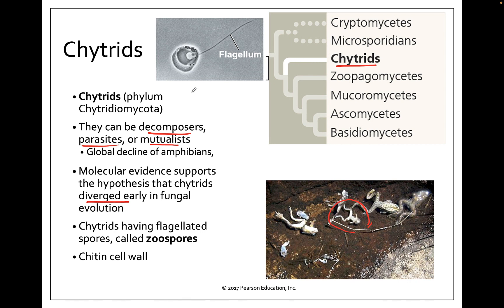Chytrids do have flagellated spores; these flagellated spores are called zoospores. The prefix 'zoe' means animal, and you can see here the spore and the flagellum that it uses to swim through the water. We believe that all of the kingdom fungi came from an ancestor that had flagellated spores. These are present in the cryptomycetes and the chytrids; they're not present in the microsporidians, but that could be because they lost them somewhere along the way. Of course, they have a chitin cell wall — that's a classic characteristic of fungi in general.